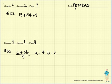P stands for parentheses. E stands for exponents. Multiplication and division we're going to do from left to right. And addition and subtraction we're going to do from left to right.